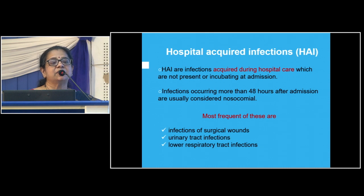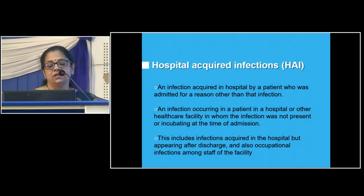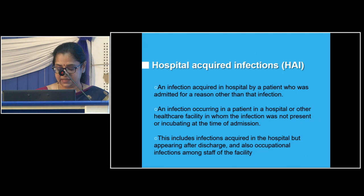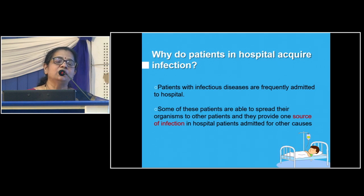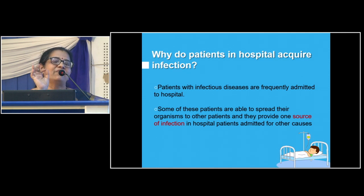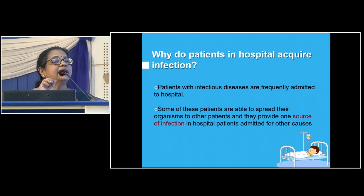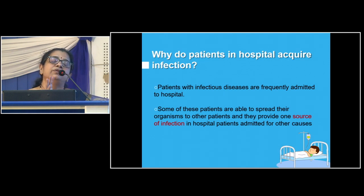Lower respiratory tract infections — most will be ventilator associated pneumonia. There is a clear demarcation between community acquired pneumonia and hospital acquired pneumonia. Patients with infectious diseases are frequently admitted to hospital with very low immunity. If you take a swab from our palm and culture it, it will grow Staphylococcus aureus — we are all carriers of MRSA and even nasal carriers. This way we are spreading infection by not washing our hands. Hand washing is very, very important and must be done before and after touching or examining each patient, and before and after inserting IV lines, catheters, or performing endoscopy or bronchoscopy.